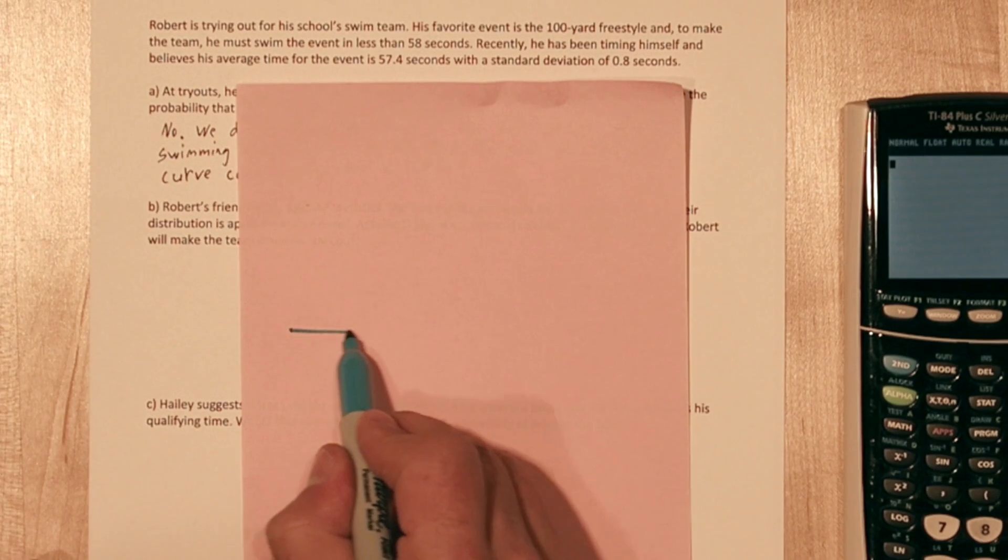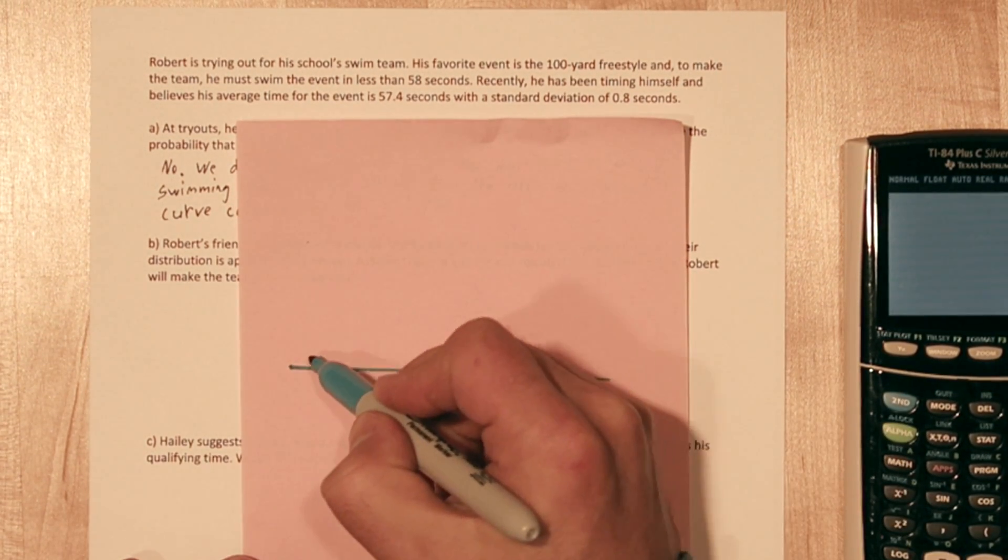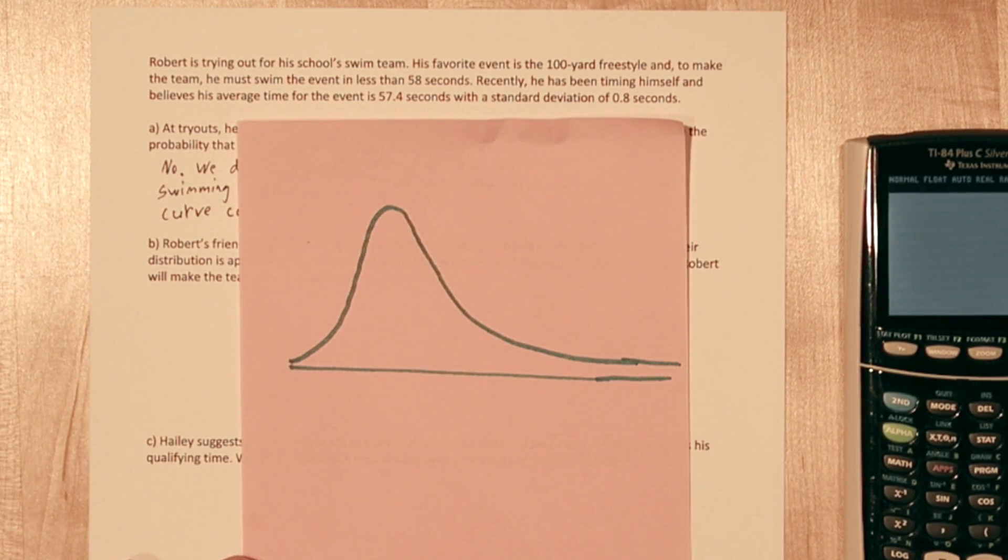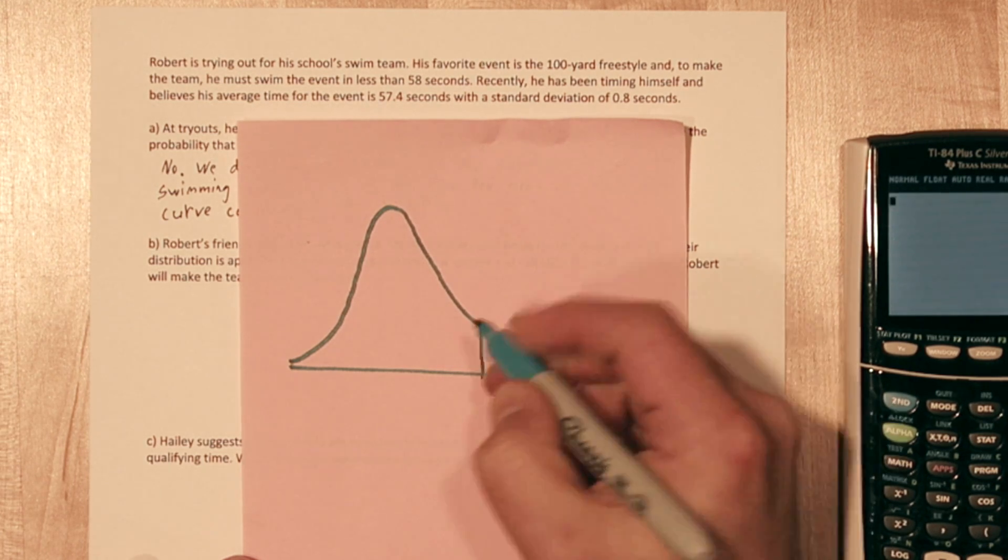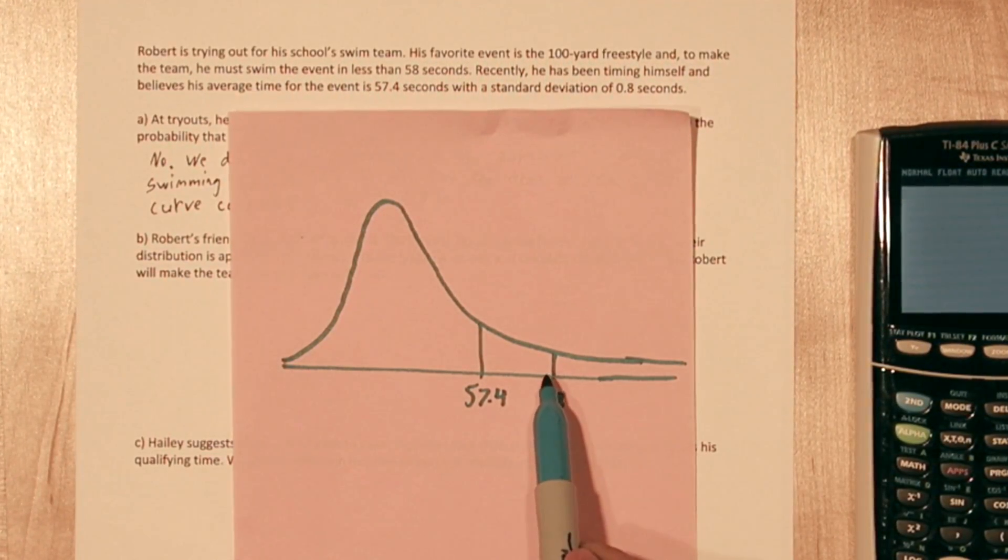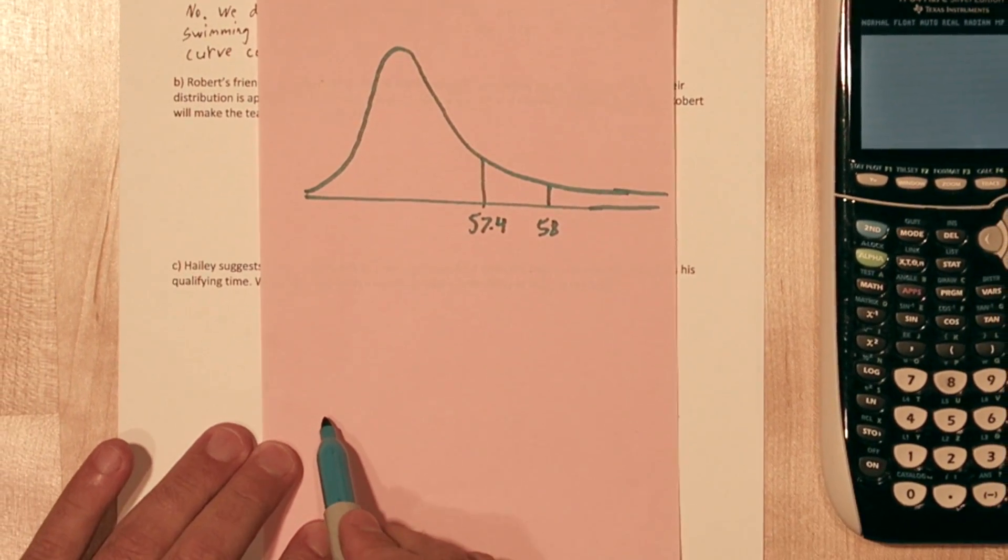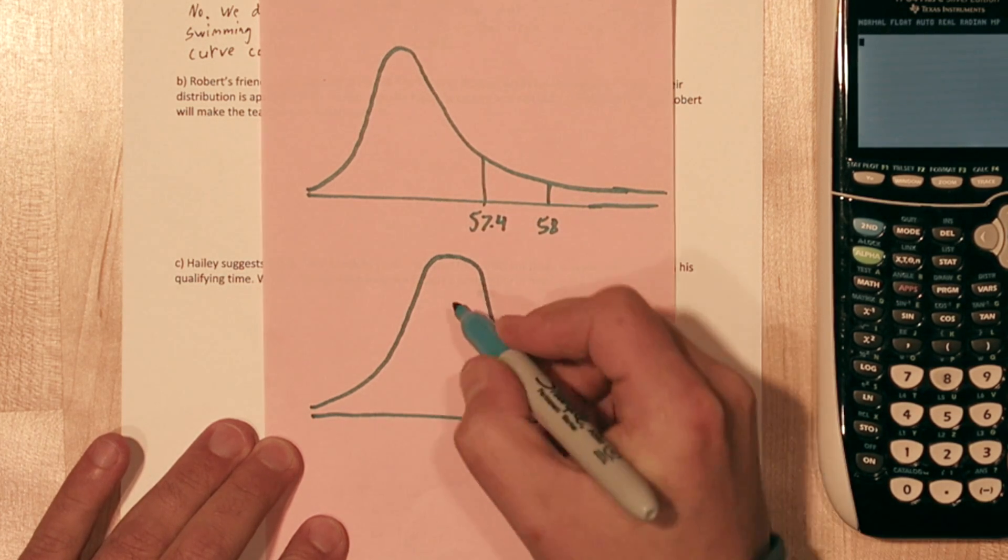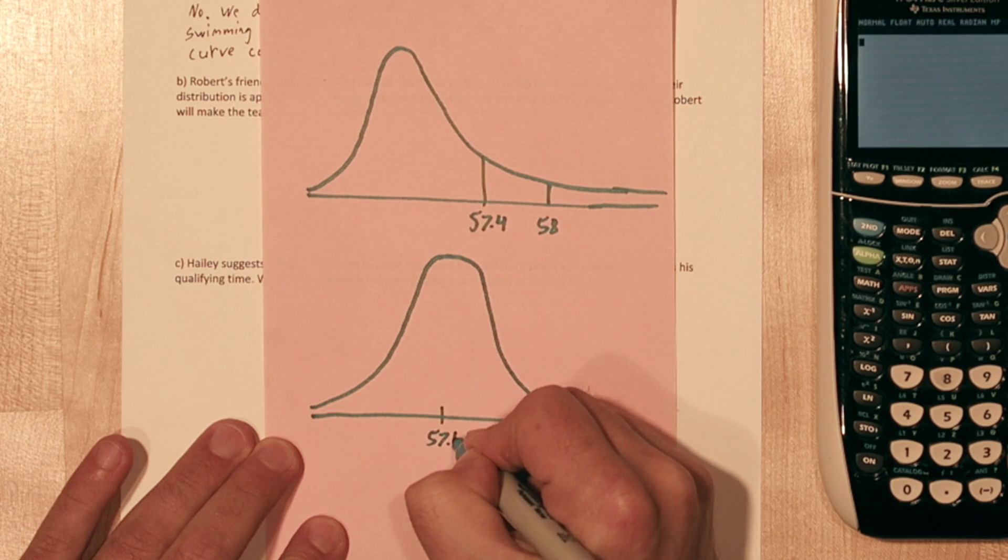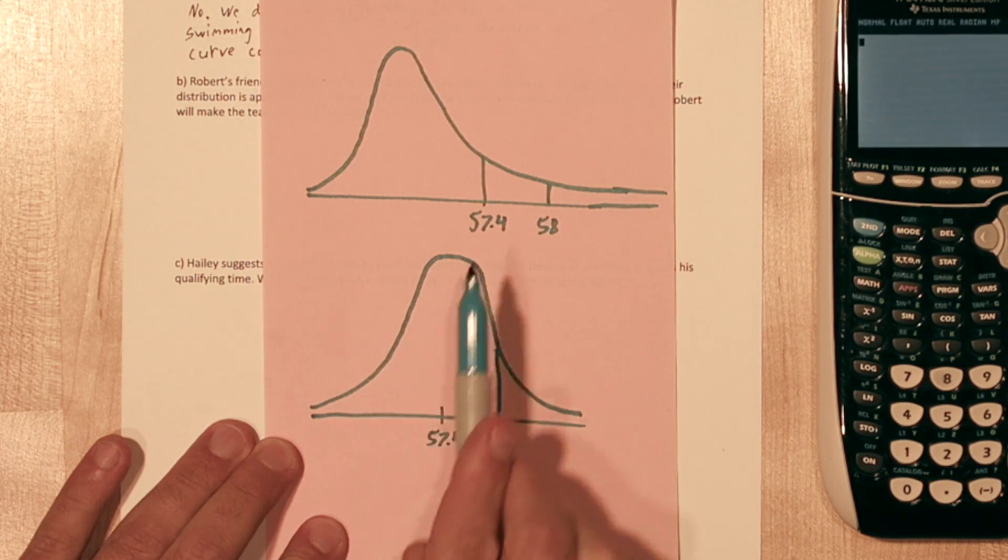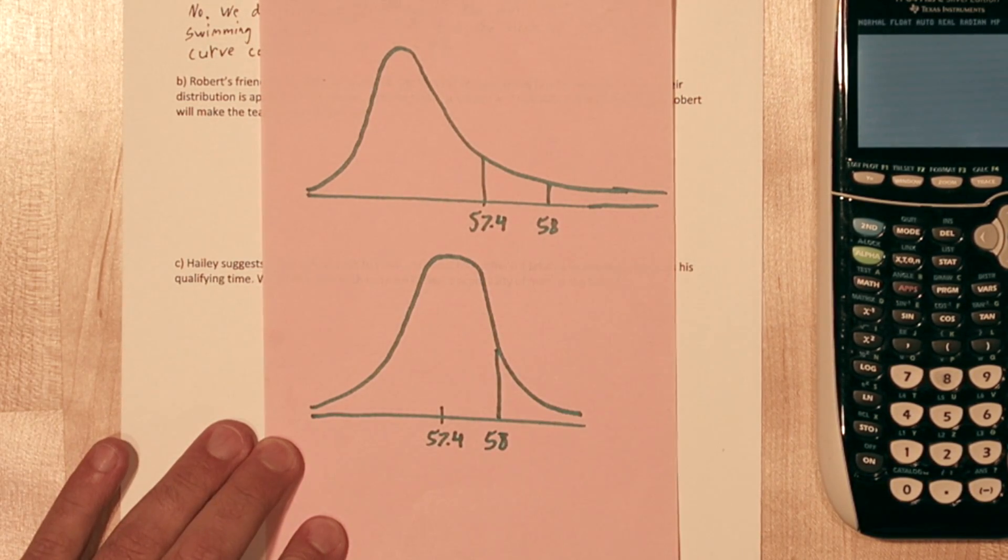Here's why the shape of the distribution is so important. If the swimming times have a skewed distribution, say like this, then the mean time of 57.4 is probably about here. Then 58 is about here. So the area we'd be interested in is everything to the left of that 58. Now if his swimming times have a distribution that's more symmetric, like this, then the mean's right in the middle, and maybe 58 is about here. The areas corresponding to the left of 58 seconds are going to be very different based on the distribution's shape, so we need to know that shape.